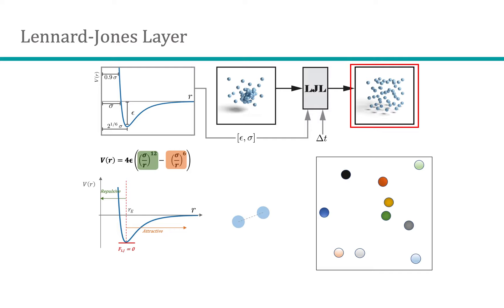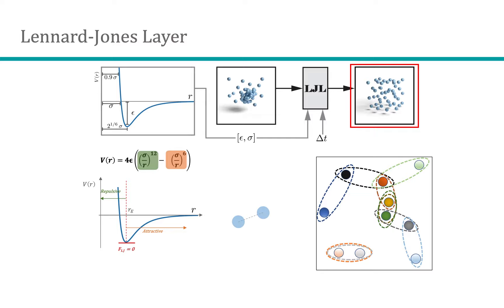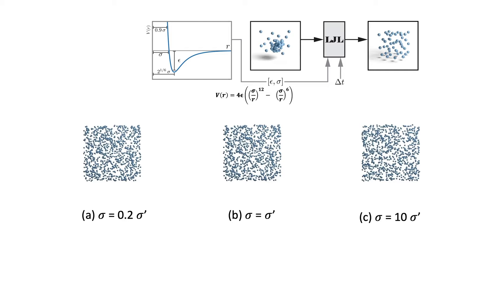In each time step, the point cloud is decomposed into a new set of independent subsystems, each containing a single pair of particles, by finding the nearest neighbor of each point. As we also include dissipation in our system, the point configuration of the particle system will eventually stabilize and form a randomized uniform point distribution after a sufficient number of iterations.